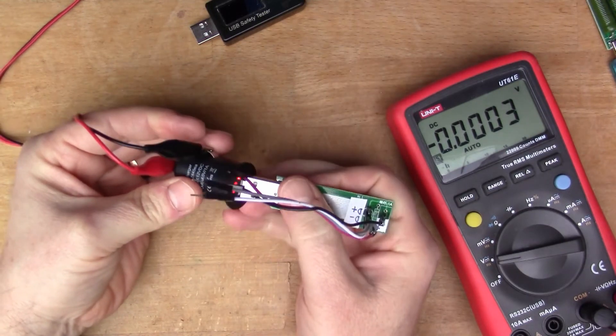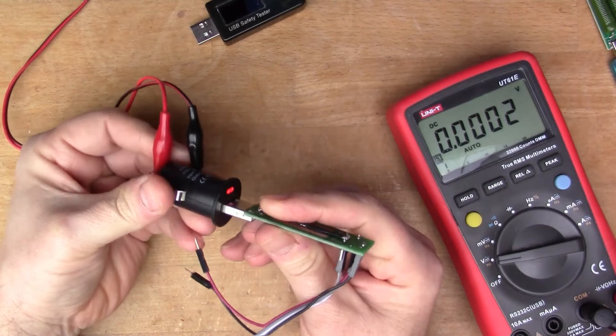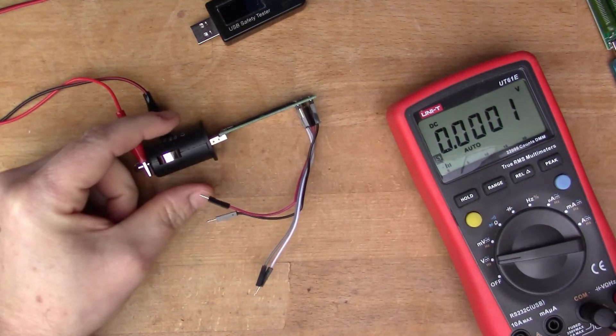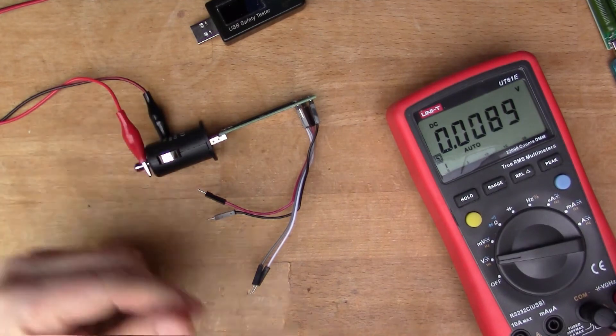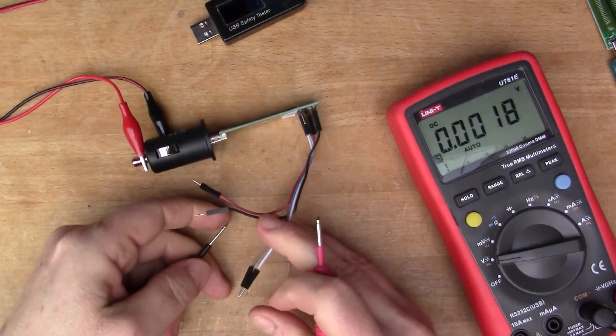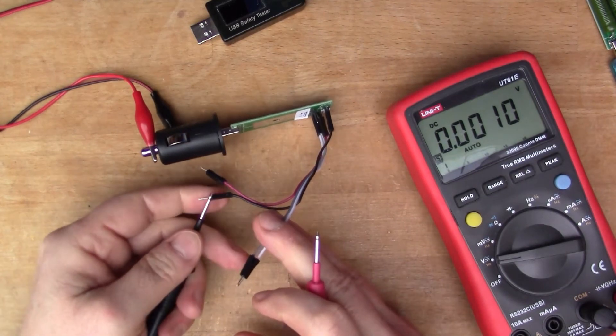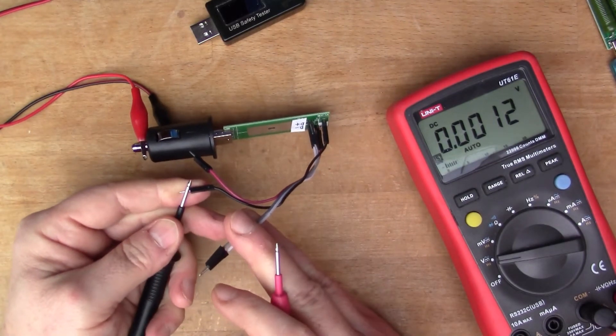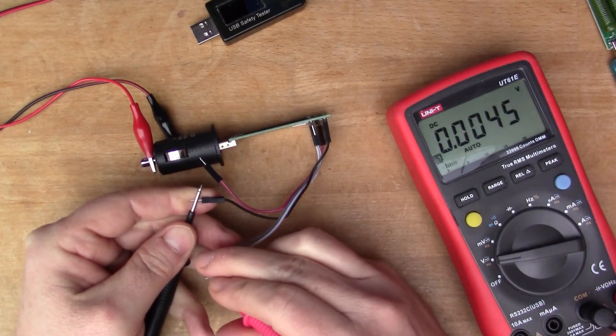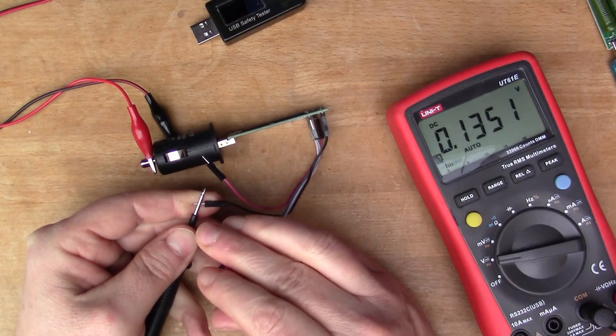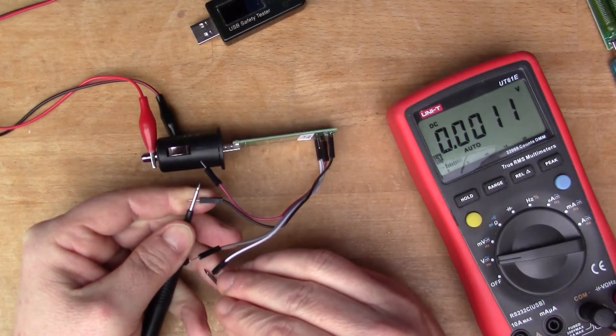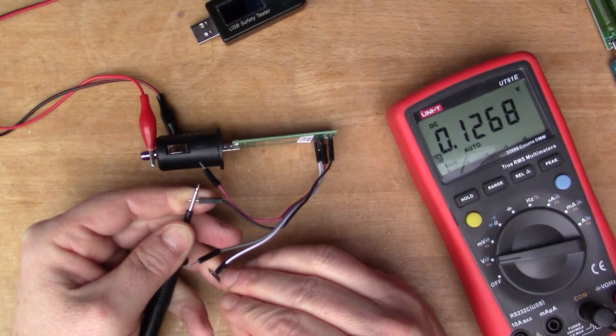So I'll use this little jig to measure the voltages on the D plus and D minus. If I put this on the black which is ground, and then we'll look at the D plus. This is 0.1 volts, about 0.1 volts.